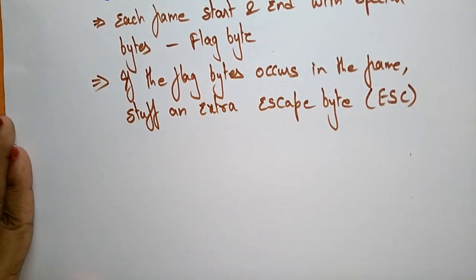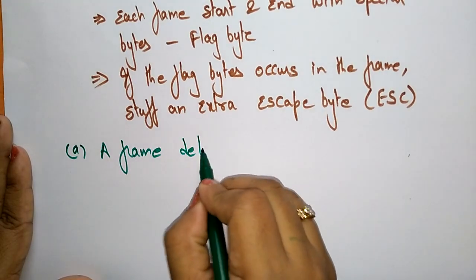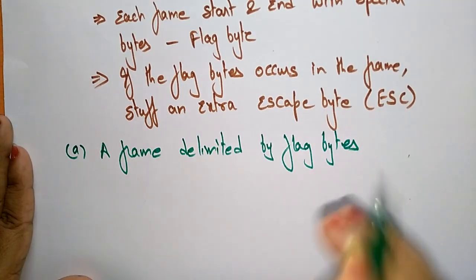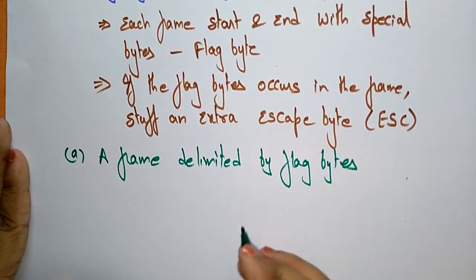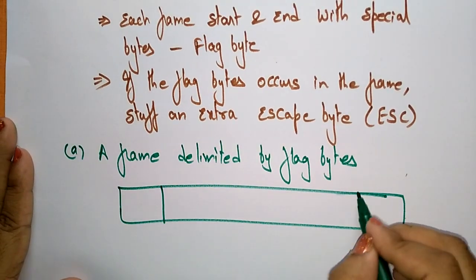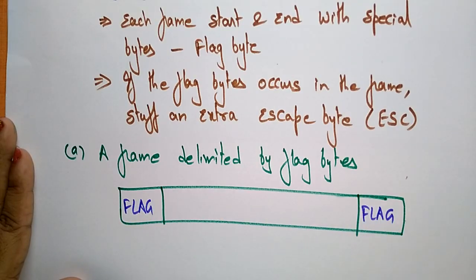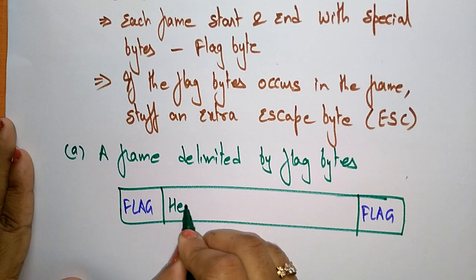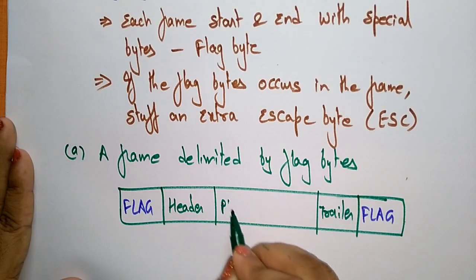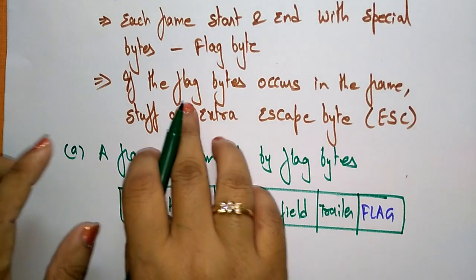Let us take an example. Suppose you take a frame delimited by flag bytes — I'm including the flag byte at the start and end of each frame. This is a frame; at the starting and ending I'm including the flag bytes. The frame consists of a header, trailer, and the payload field.